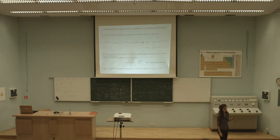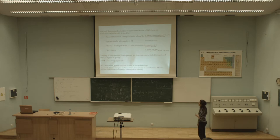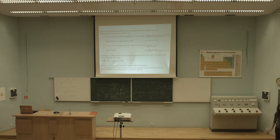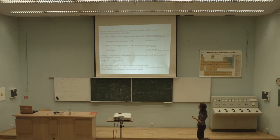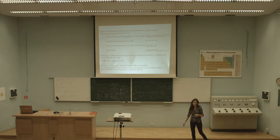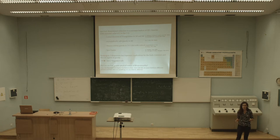To summarize what we know so far: the running of the spectral dimension is a very common feature of quantum gravity theories — it appears in several models — and the most common UV value for this dimension is two. We saw in Joao's talk that running to two dimensions is very special from the point of view of cosmology.